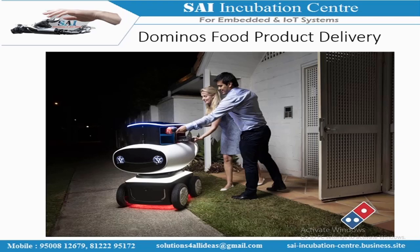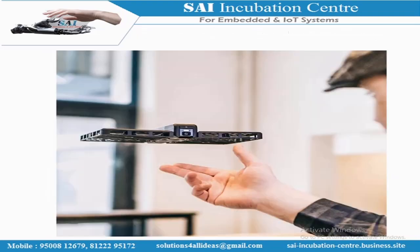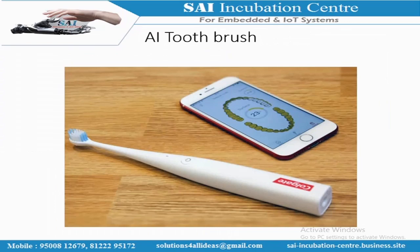Dominos also introduced a road-based delivery robot. You enter the latitude/longitude coordinates of an address and it delivers packages to customers. I want to emphasize: robotics isn't only for industrial or automobile applications. Even food product companies like Dominos and cosmetic companies like Colgate have units working on robotics and AI. Colgate introduced an AI toothbrush available on Amazon that can monitor brushing activity.